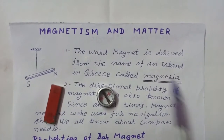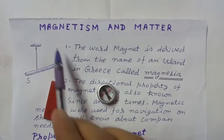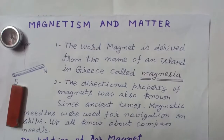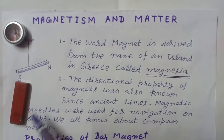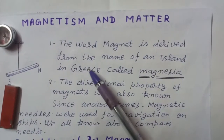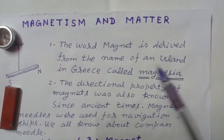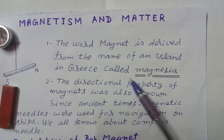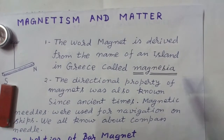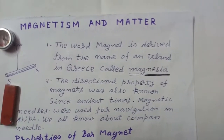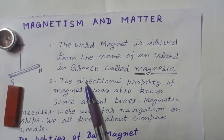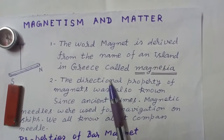In this video we are going to start a new chapter: magnetism and matter. As you may see here, this is a small bar magnet. The word magnet is derived from the name of an island in Greece called Magnesia, where magnetic ore deposits were found nearly 600 BC.